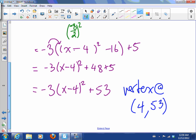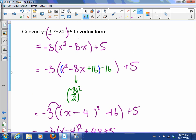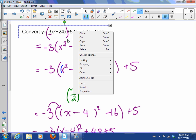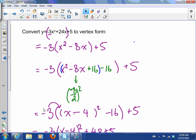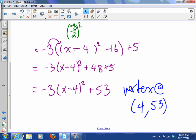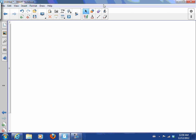This means that there's a vertex at the point (4, 53). What I would like you to do is give yourself this example again and cover this up and try it again. And then for class, I want you to convert to vertex form this equation.